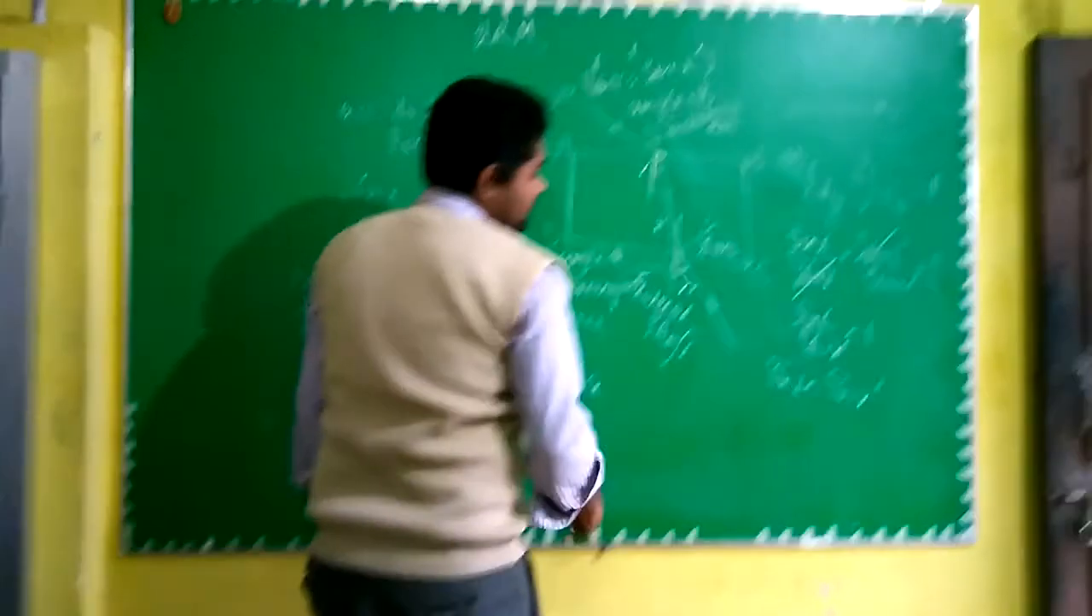It means I is equal to R dash. And I is what? Angle of emergence. And therefore we have proved here angle of incidence is equal to angle of emergence.